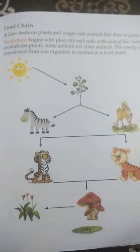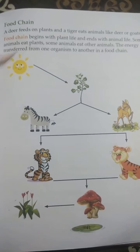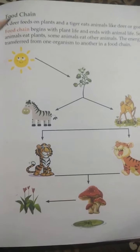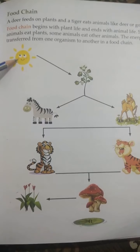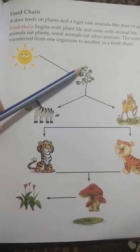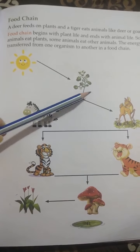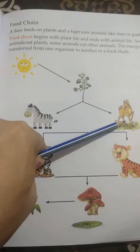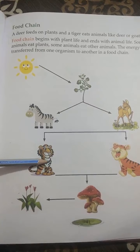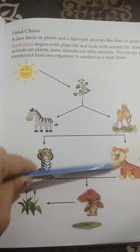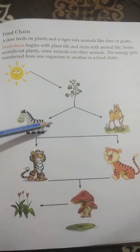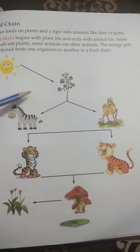This transfer of energy from one to another is what we call a food chain. And where does the food chain start? It starts from the sun, because plants get their food from the sun, and then they give it to animals — small animals — and then the tiger eats those animals. This is how our food chain is built.